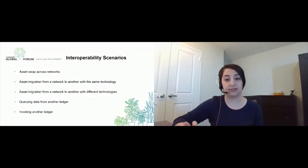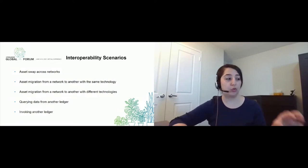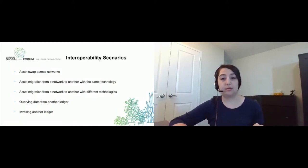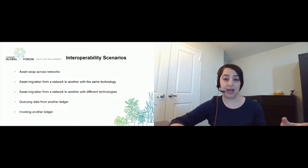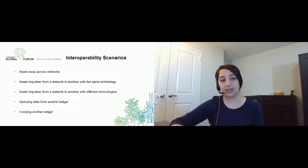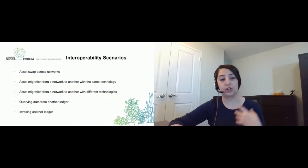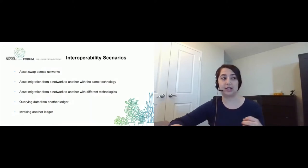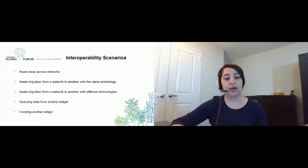So I'm talking about two Hyperledger Indy networks with the same technology, but my asset is on one of them and I want to migrate it to the other. This is different from the third scenario, which is when I want to migrate the asset to another network with a different technology — for example, to a Hyperledger Fabric network — and that has a few more challenges. Another scenario is when we want to query data from another ledger. For example, one blockchain has weather information on it, and I have an application that wants to use that weather information, so I can just query that data from that blockchain without migrating or swapping any asset.